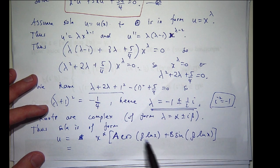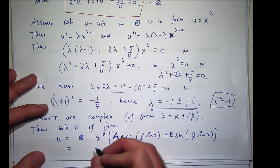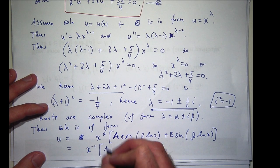So here, α is -1, β is 1/2, so we get the following.